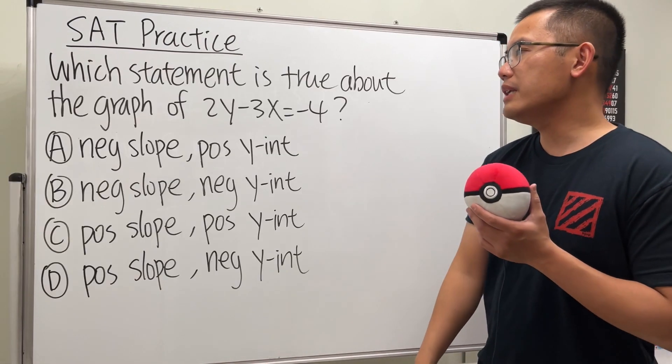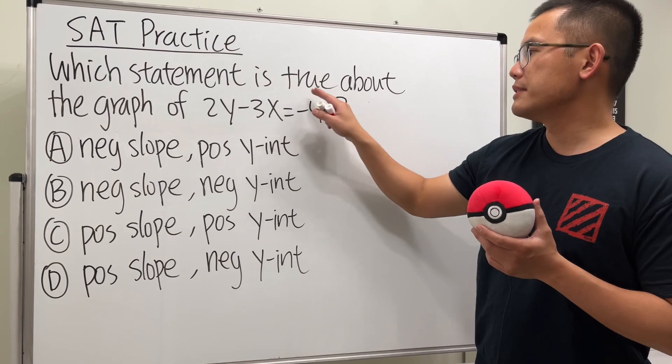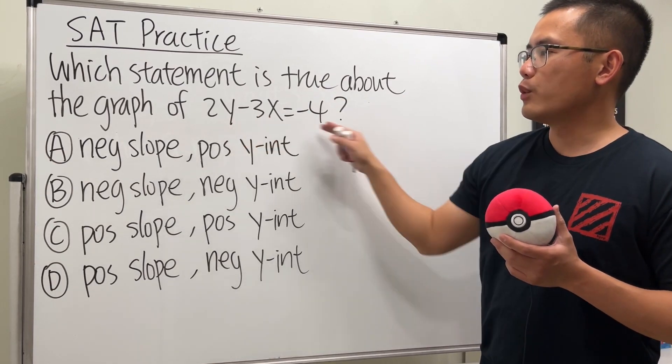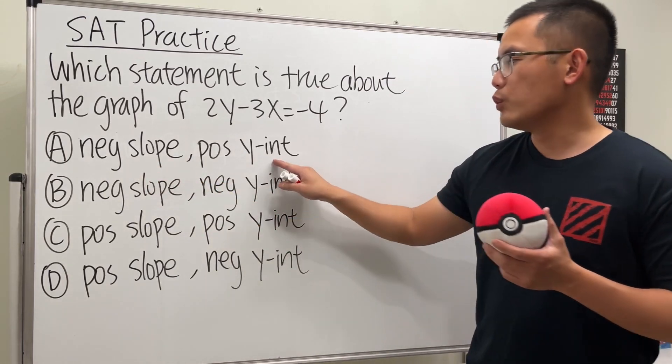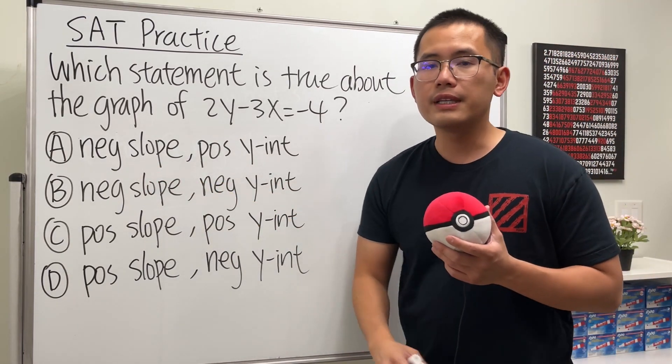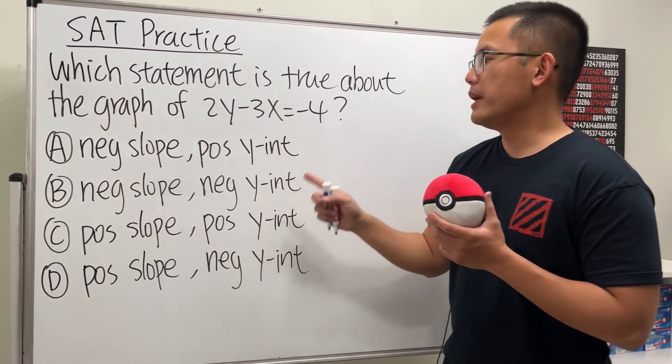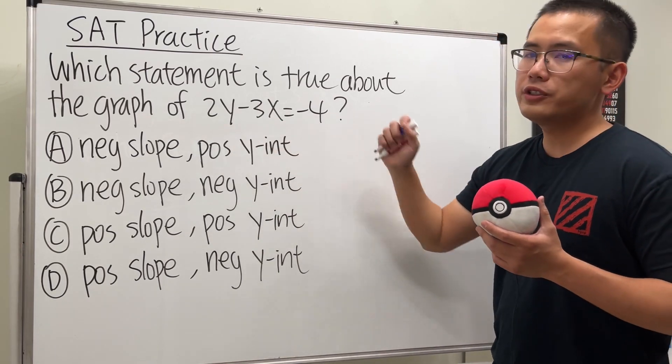Another SAT algebra question. The question is asking us which statement is true about the graph of the equation 2y - 3x = -4. We see that the question is asking about the slope and the y-intercept. So how do we find the slope and y-intercept of this equation?